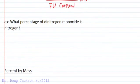What's the percentage of dinitrogen or percentage of nitrogen in dinitrogen monoxide? We know from our nomenclature studies that dinitrogen monoxide is a molecular compound, two nonmetals, N2O.